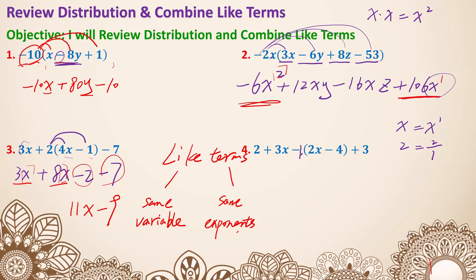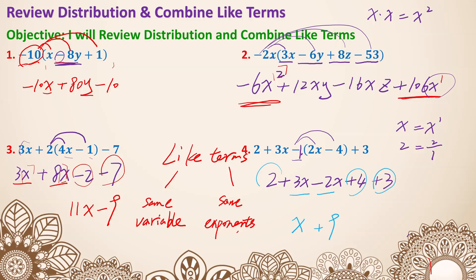In this case we do have a negative 1, not just a 1, that needs to be distributed to the 2x and the negative 4. So we have 2 plus 3x, negative 1 times 2x is negative 2x, negative 1 times negative 4 is positive 4. On the back we have a plus 3. Now we still need to combine like terms: 3x and negative 2x together is just x, and 2, 4, 3 together is 9.